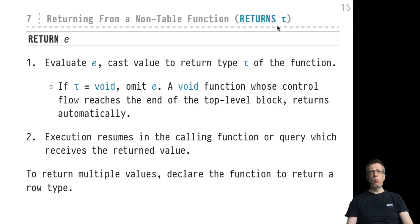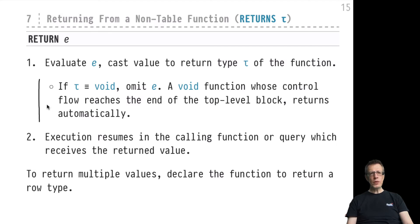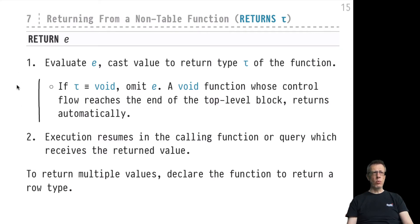There are particular functions — probably better called procedures — that return a type of void: RETURNS VOID. These functions are not expected to return any value and act like procedures in other programming languages. In such cases you can use the RETURN keyword without any expression. The function returns when it hits the RETURN keyword, or it also returns automatically when control flow reaches the final statement in the top-level block. Once this happens, execution resumes in the calling function or the calling query.